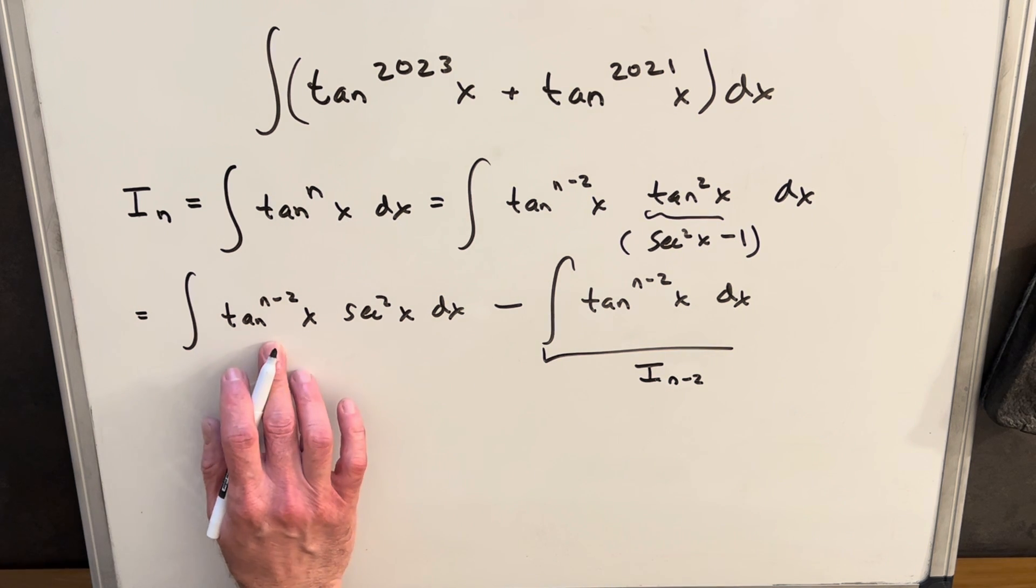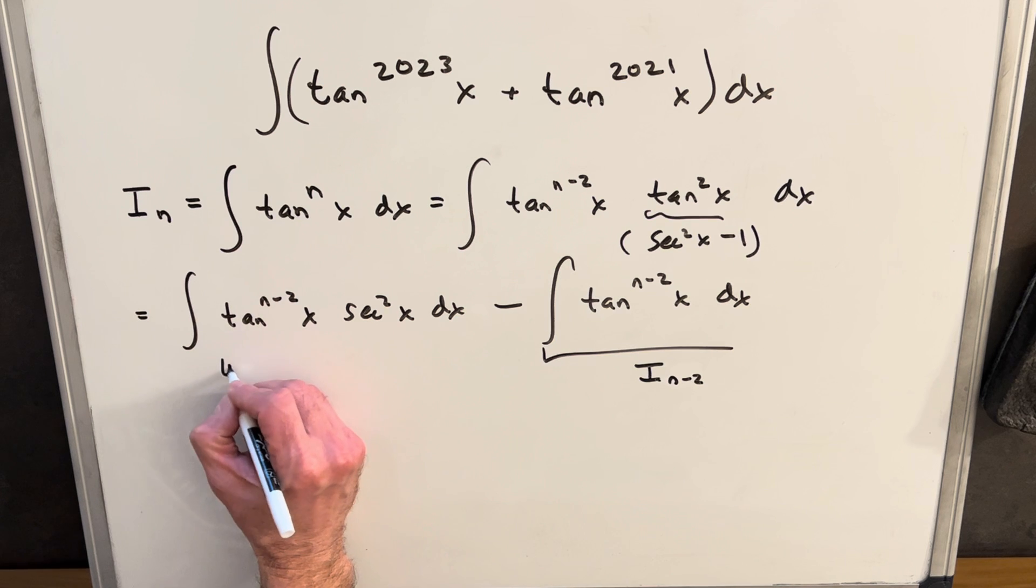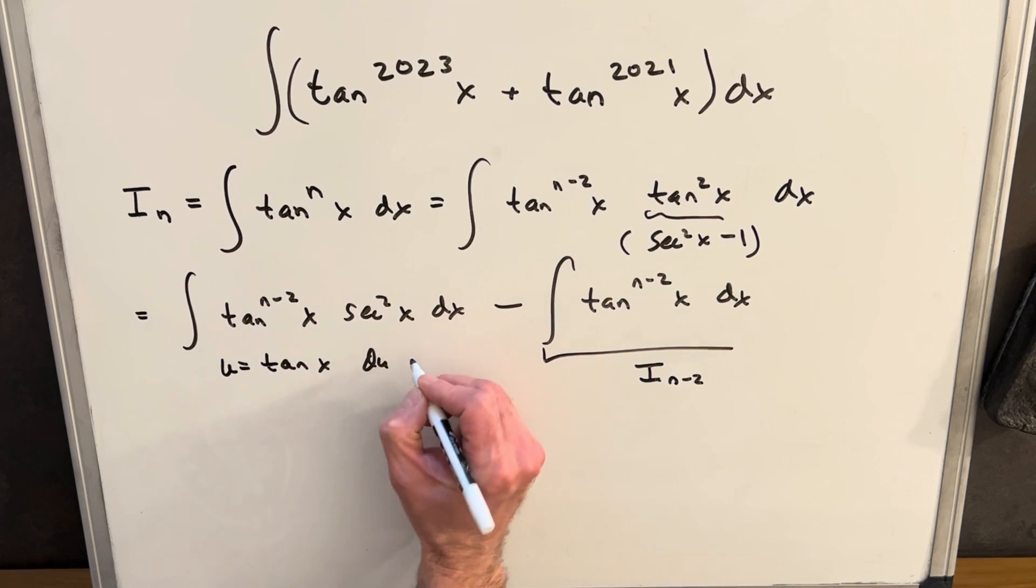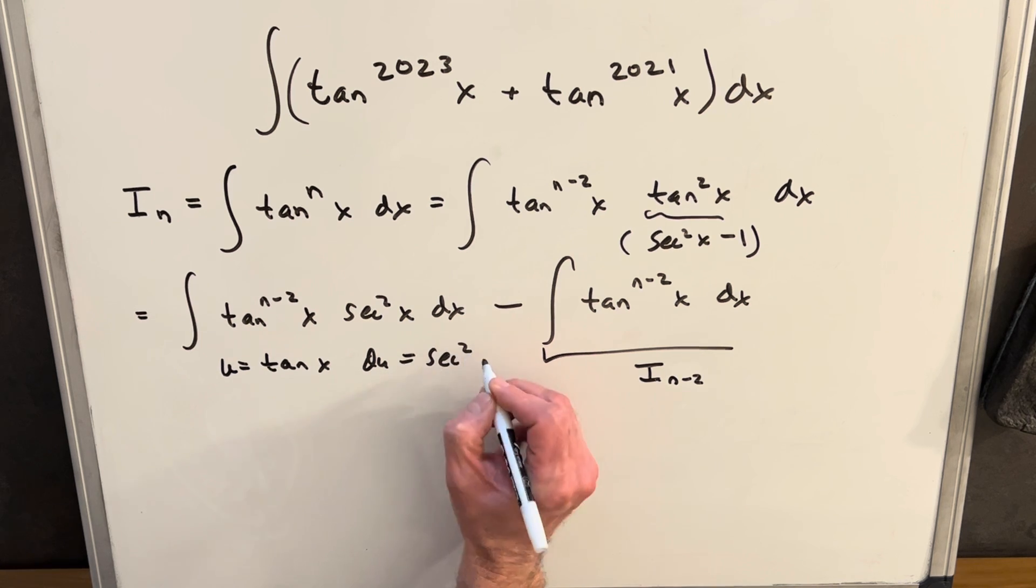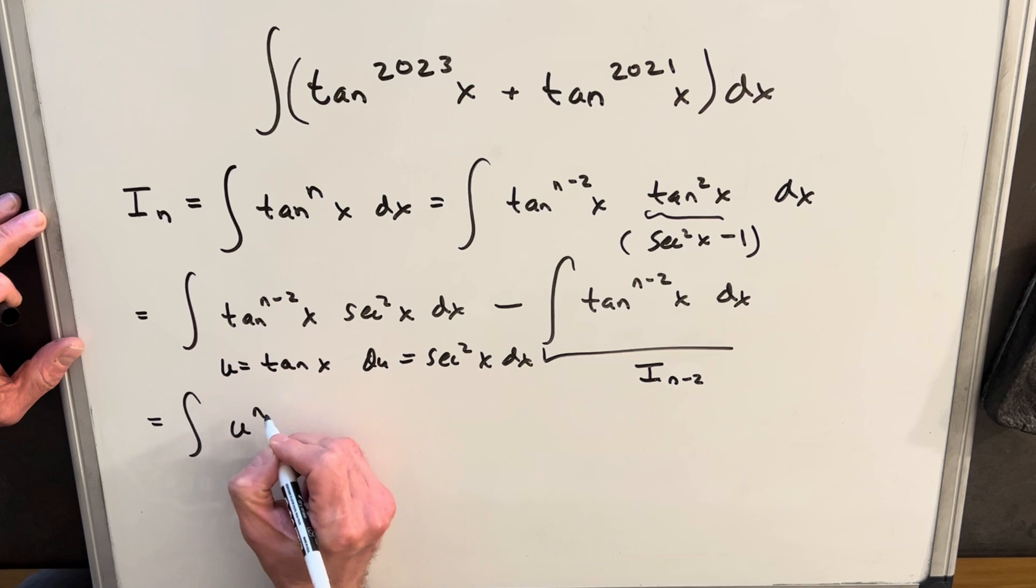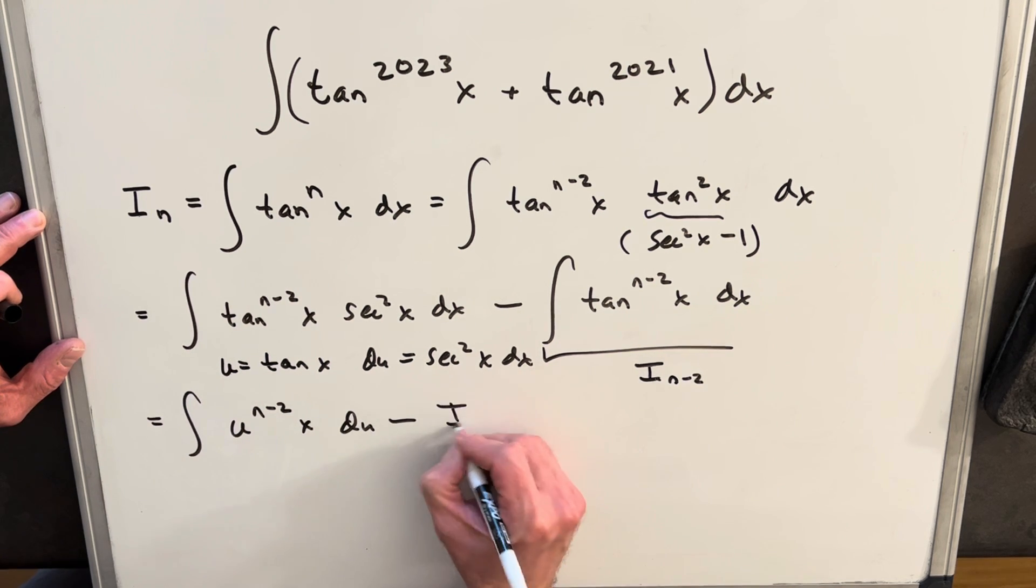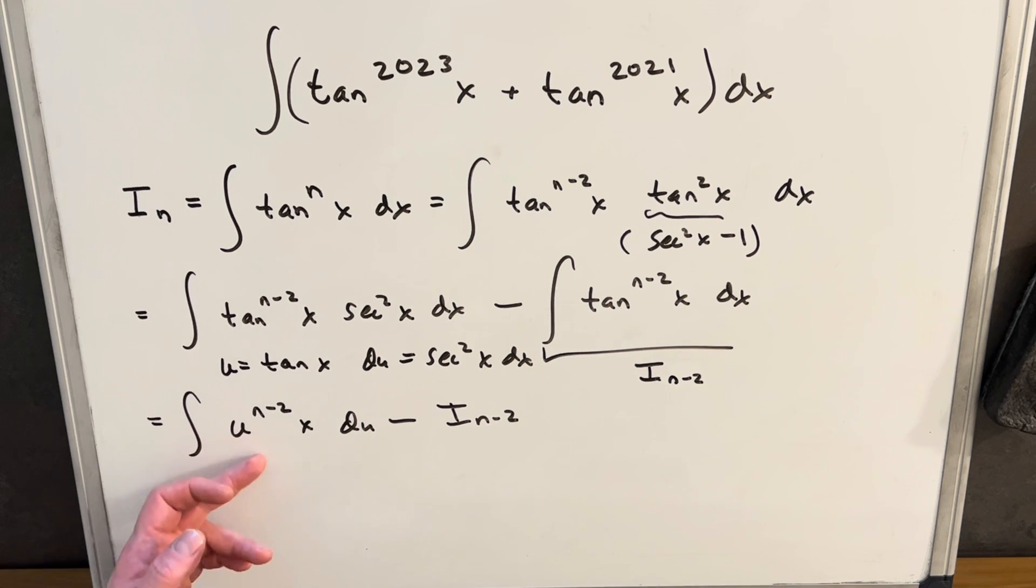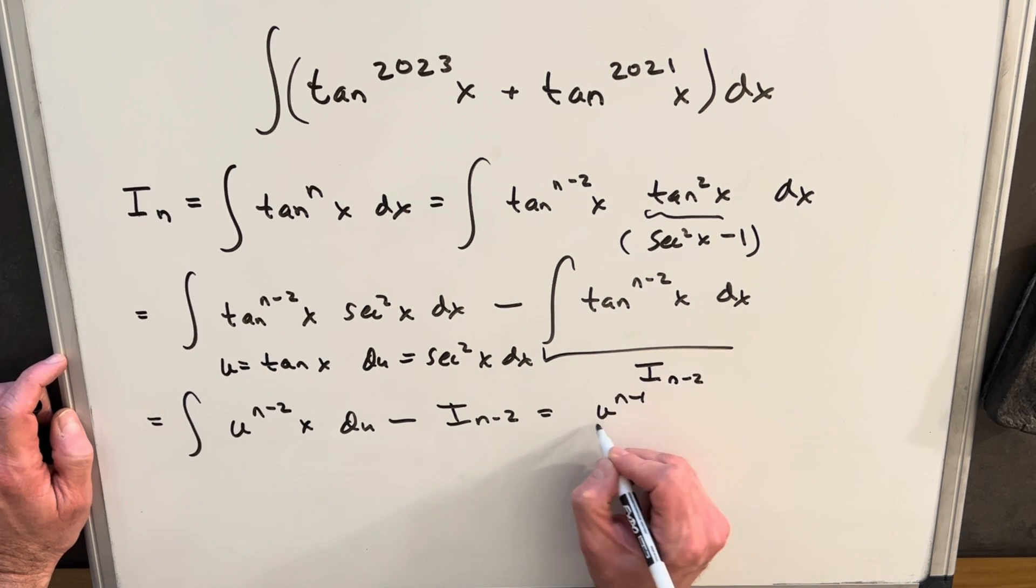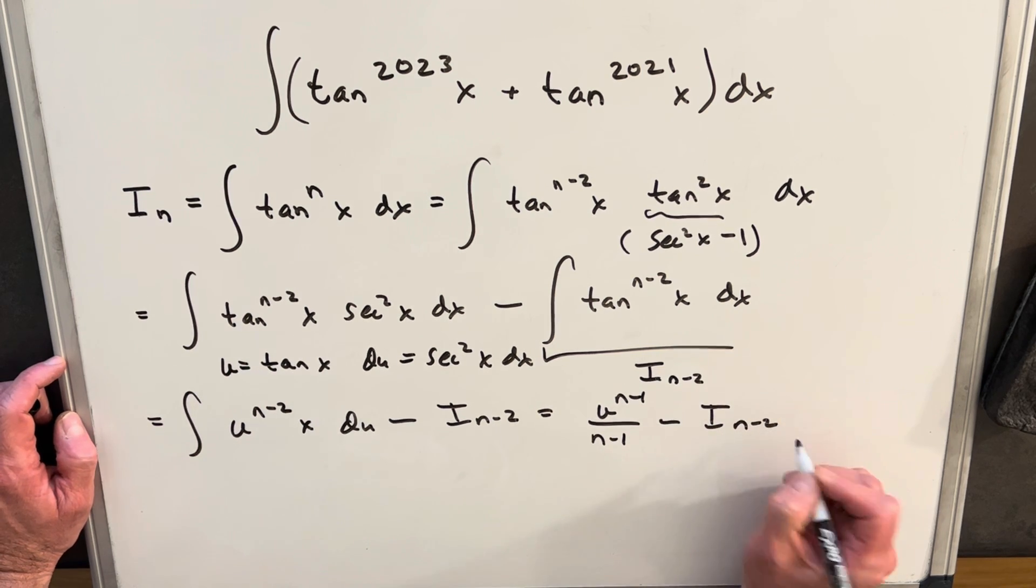And then the key thing here is we notice that the derivative of tangent is secant squared. So we can make a u substitution. We'll just call our u tan x, and then du is going to be secant squared x dx. Making the substitution, we're going to have u n minus 2x du minus our i sub n minus 2. But then here we can just use the power rule, and we're going to have u n minus 1 over n minus 1 minus i n minus 2.